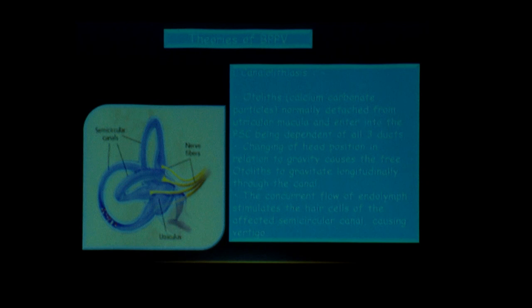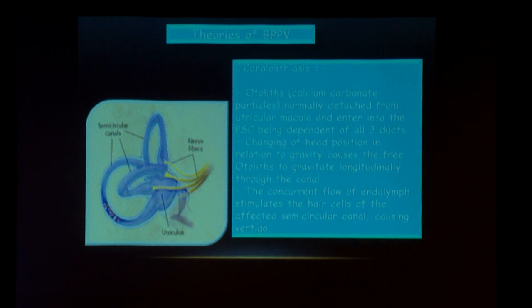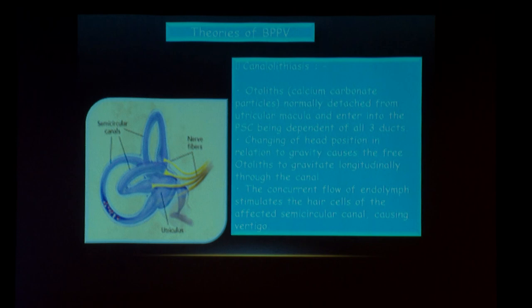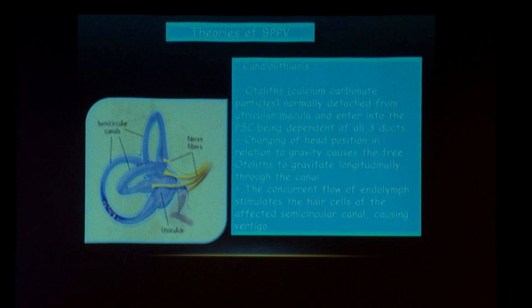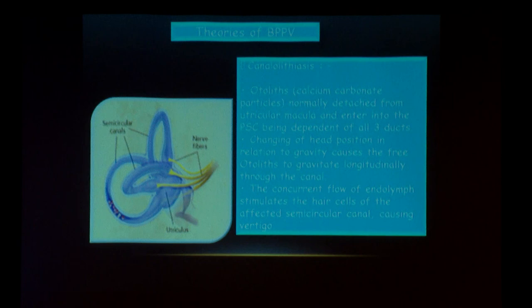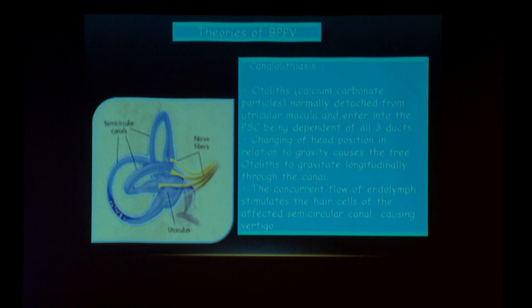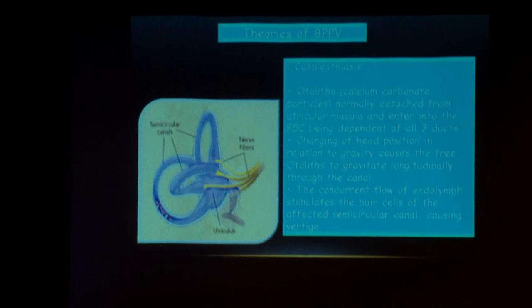In cupulolithiasis, the otolith particle is incorporated into the cupula. The other very popular theory is canalolithiasis, where the otolith particles are circulating in the endolymph of the semicircular canal. They get detached from the utricular macula and enter the semicircular canal, commonly the posterior semicircular canal because it is the most dependent canal. Normally the specific gravity of endolymph and cupula are the same, so we cannot sense gravity. When the otolith particle enters the endolymph, its specific gravity changes, dragging the endolymph and cupula during positioning, deflecting the stereocilia-kinocilium, generating an action potential, and the patient feels vertigo.